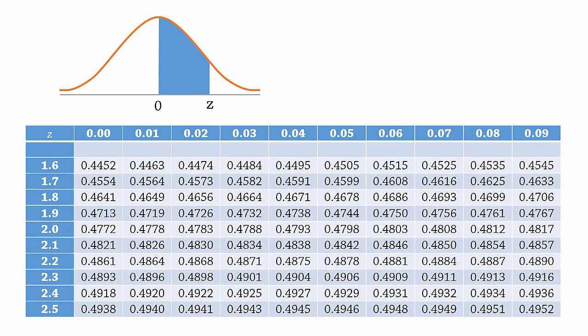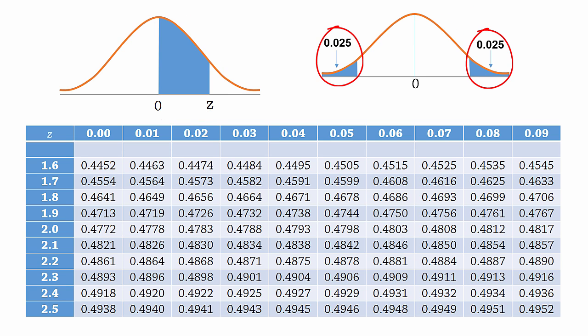In the mean to z table, the entries represent the areas from 0 to z, shaded here. And because we have 0.025 in the tails, and the area on either side of the mean is 0.5, then the area from 0 to z is 0.5 minus 0.025, which is 0.475.